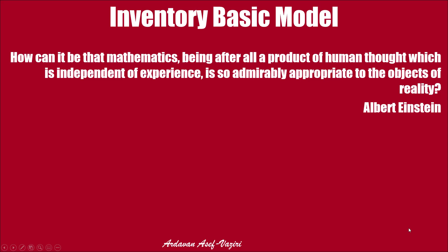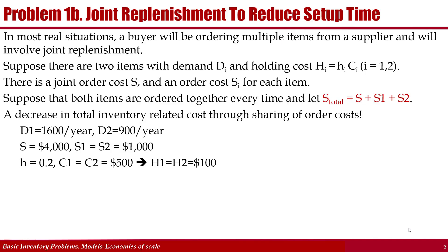We want to order several items together. For example, we have two products. Product 1 has demand of $1,600 and Product 2 has demand of $900. Holding cost is 20% of the product cost, and the product cost is $500, so holding cost per unit per year would be $100 for each unit. The only difference is the ordering cost.